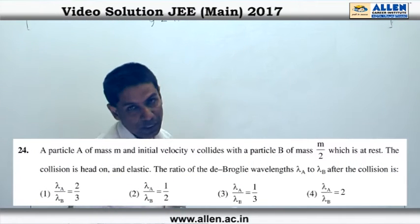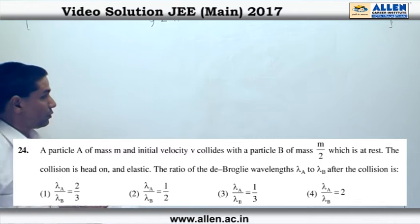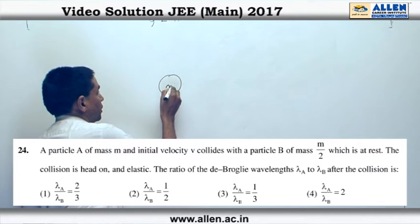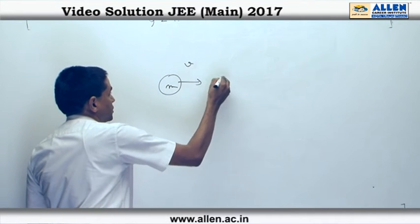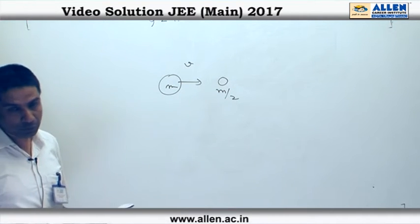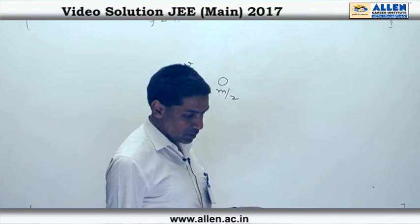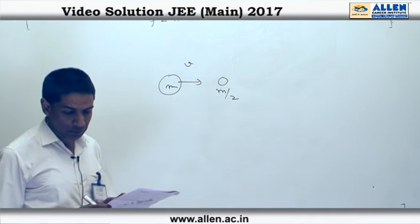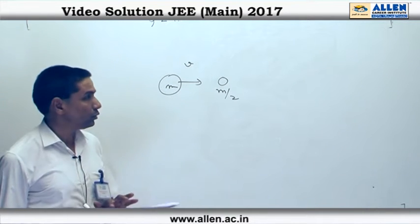Question 24: A particle A of mass m with initial velocity v collides against a particle of mass m/2 which is initially at rest. After an elastic collision, we are asked to find the ratio of de Broglie wavelength of A to that of B.